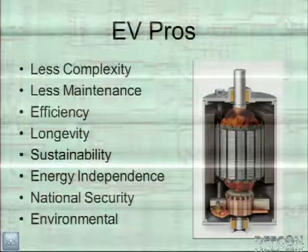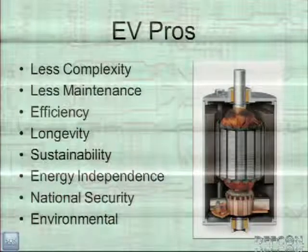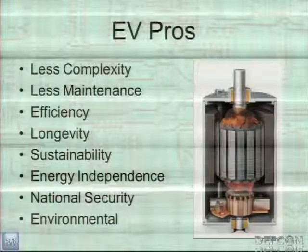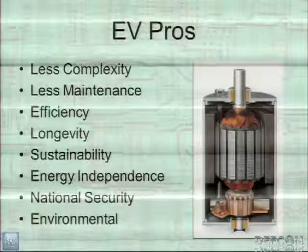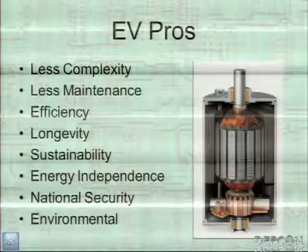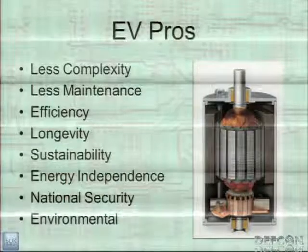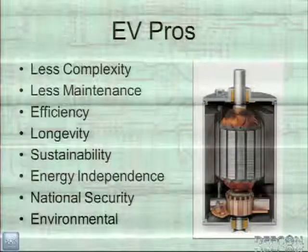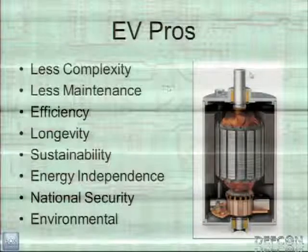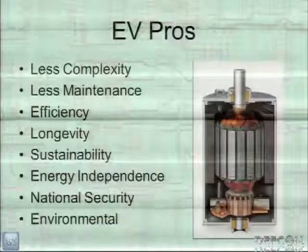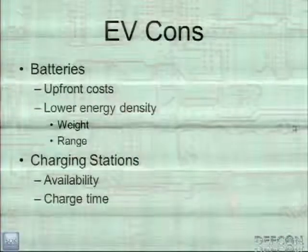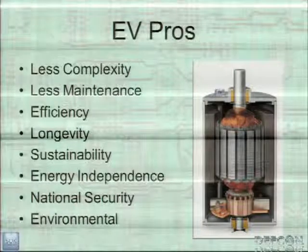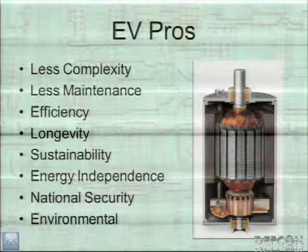EV pros: they're less complex, less maintenance, more efficient, and last longer. It's more sustainable because electricity can be generated in dozens of different ways, leading to energy independence. Many EV drivers also have solar panels and are completely self-sustained. There are national security benefits too — if everyone drove electric, we wouldn't need oil from the Middle East. The electric motor has very few moving parts; only the bearings and brushes wear, the bearings lasting about 250,000 miles and brushes one to 200,000 miles, replaceable in about five minutes.